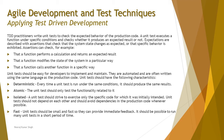To verify each component is working correctly, we use assertions — checkpoints or verification steps — to confirm that the code performed the expected operation. Assertions can check: that a function performs a calculation and returns an expected result, that a function modifies the system state in a particular way, that a function calls another function in a specific way, or assertions for calling a library or method based on your scripting.